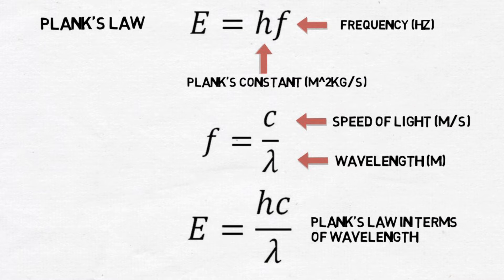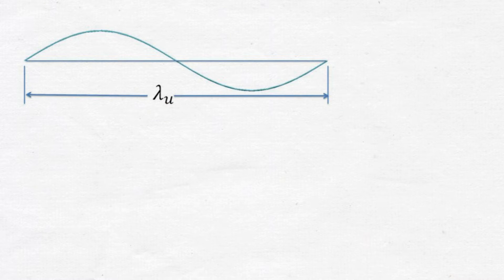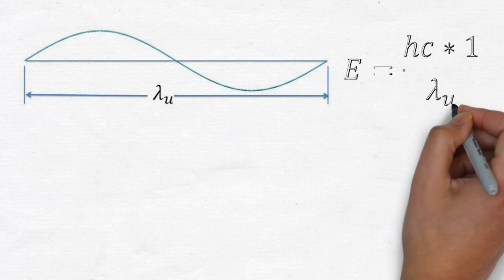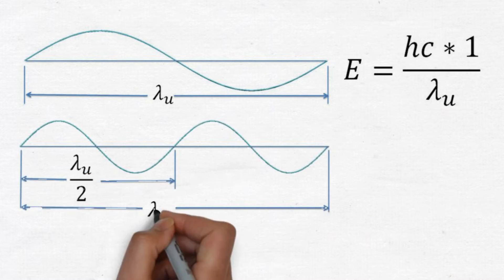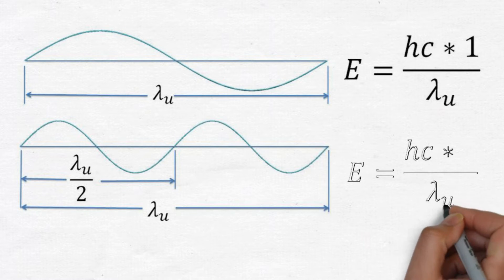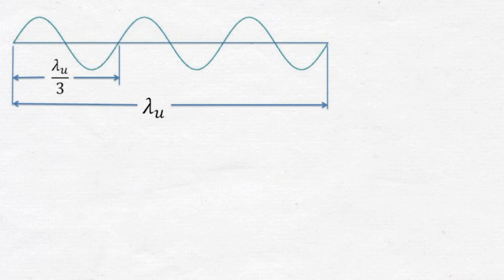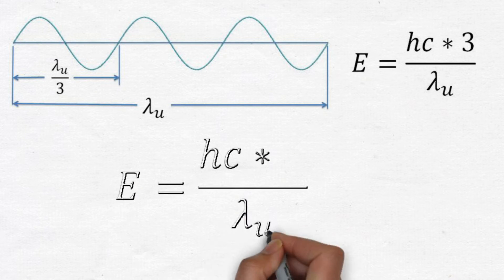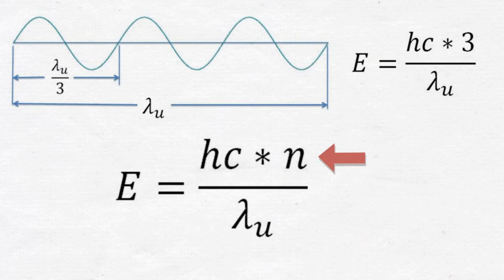We can quantize this equation with dimensionless integers by using the principle of harmonics. Let's start with a photon with a fundamental unit wavelength representing its lowest energy state. By dividing this unit wavelength by integer multiples of equal length, we create the harmonics of this fundamental frequency. According to Planck's law, the energy of a photon is proportional to the number of divisions in its unit wavelength. Therefore we can now write the quantized version of Planck's law.